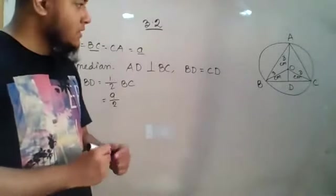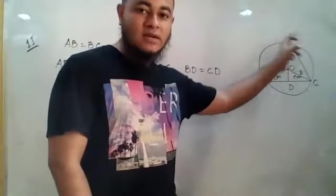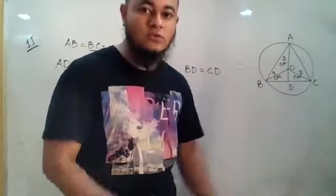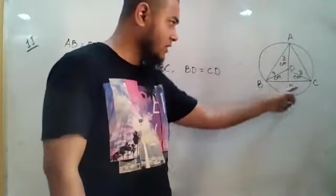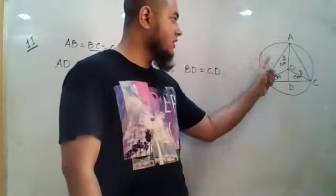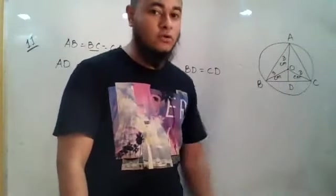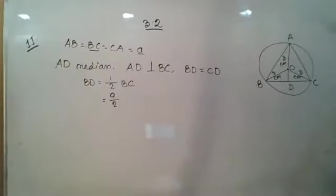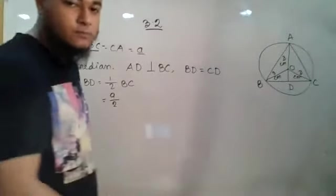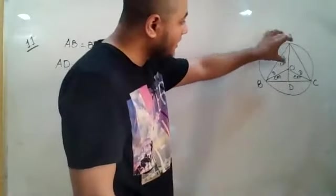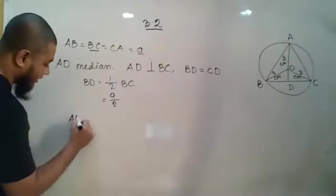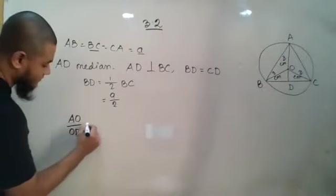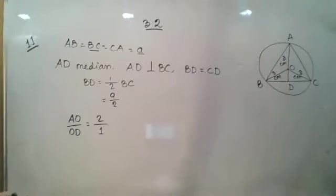This may be new to you: the center of the circumcircle of an equilateral triangle is also the centroid. In higher math we discussed that the centroid divides the median in a 2:1 ratio. So AO:OD = 2:1. According to that, we can write AO/OD = 2/1.